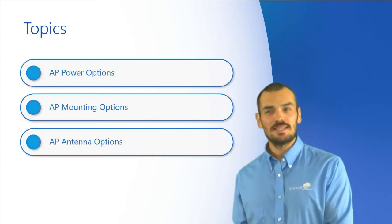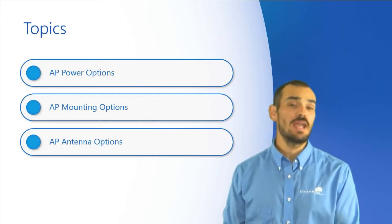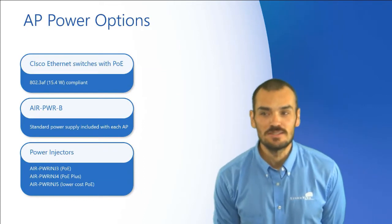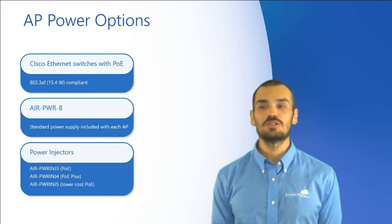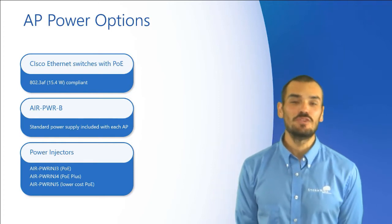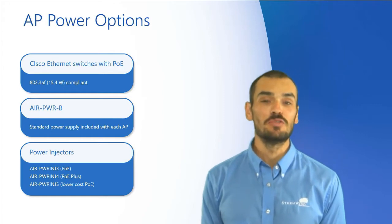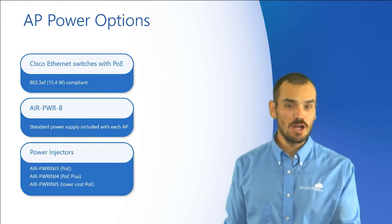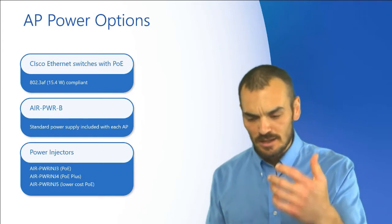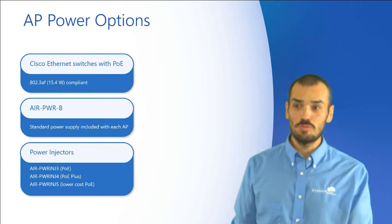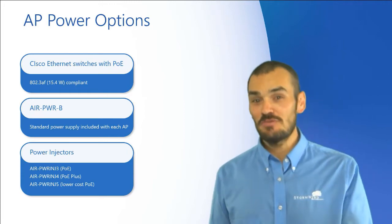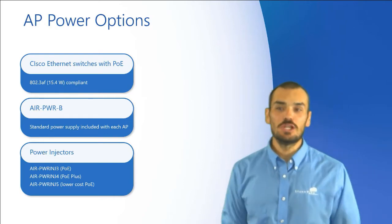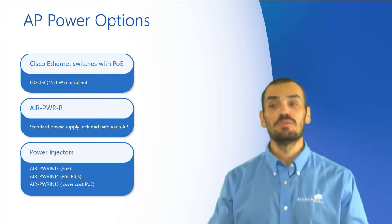For example, the power and antenna options can really affect where and how your access point gets mounted, if it's mountable at all. Now there are various access point power options, including Cisco switches which provide up to 15.4 watts via Power over Ethernet, or POE. One thing to factor in is the add-on modules for certain access point models — the Wireless Intrusion Prevention module, the 802.11ac Wave 2 module — because the more stuff you add to an access point, the more power it's going to require.